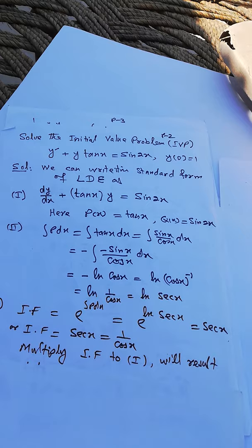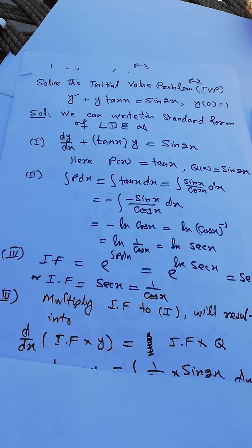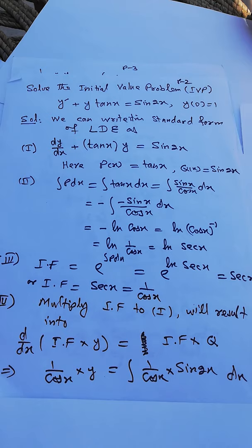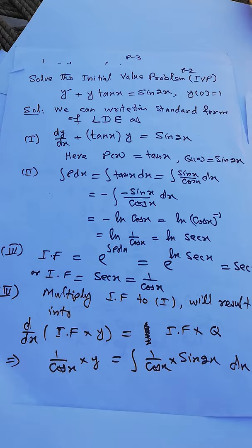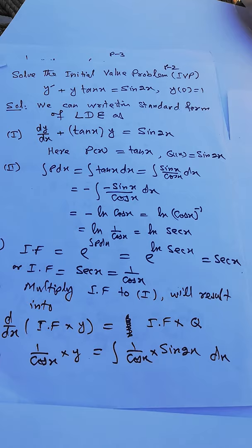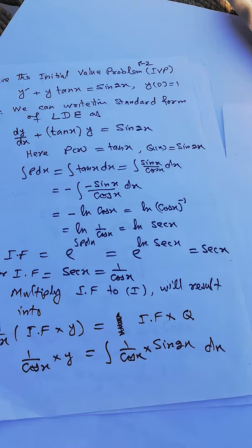We multiply the standard form by the integrating factor sec x, or equivalently 1/cos x. This results in d/dx of (integrating factor times y) equals integrating factor times Q. So we get 1/cos x times y equals the integral of 1/cos x times sine 2x.